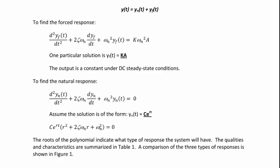To find the forced response, the first thing we will do is write the governing differential equation in terms of y_f of t: the second derivative of y_f of t, plus 2 zeta omega_n times the first derivative of y_f of t, plus omega_n squared times y_f of t, equals k omega_n squared times a. Because our input is a step input, x of t equals a, and one particular solution is y_f of t equals ka.